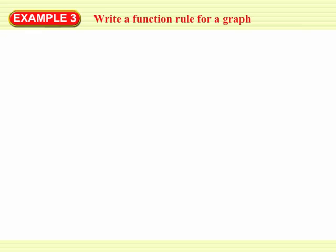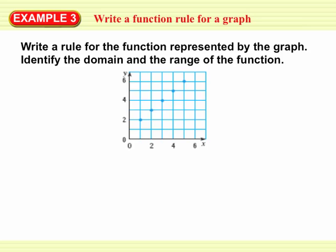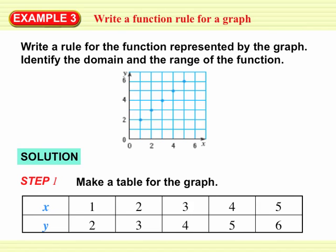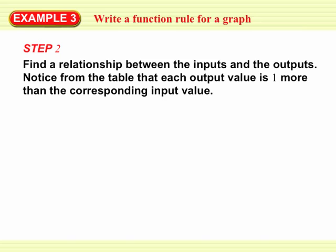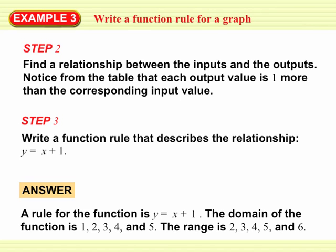This next section goes through example 3 in section 1.7. It asks us to write a rule for the function represented by the graph, and then to identify the domain and range. We notice the first point has an x value of 1 and a y value of 2 — after building a table from all the points, we notice the y value is always one more than the x value: y equals x plus 1. The domain is the x coordinates of the points we saw, and the range is the y coordinates.